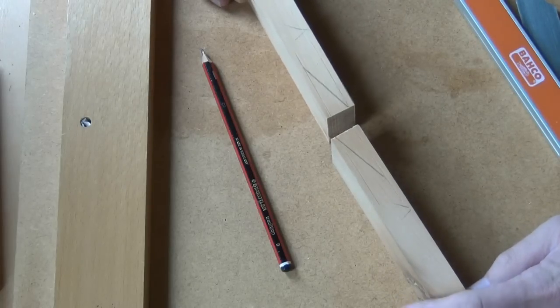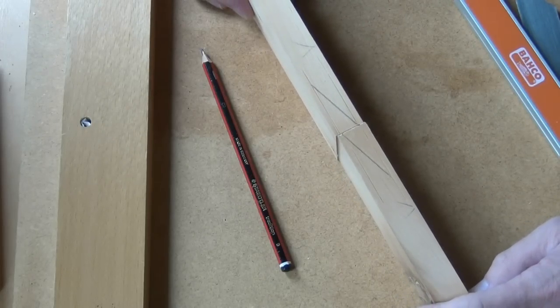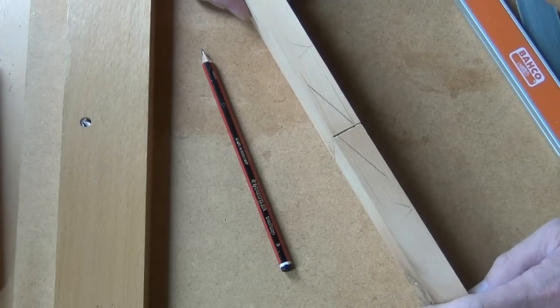So I'm all set up now with my components nicely squared, squared off on the end, same thickness, same width.